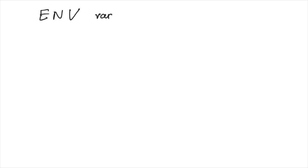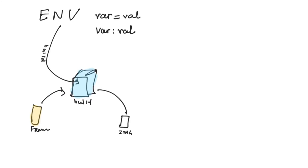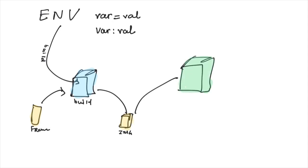The ENV instruction in a Dockerfile is used to define environment variables. There are two syntax options: 'ENV VAR=value' or 'ENV VAR value'. Environment variables are provided during the build process, and subsequent instructions can use them. After you build your image and launch a container, the container's runtime also has those environment variables available. So ENV variables are available during both build time and runtime.